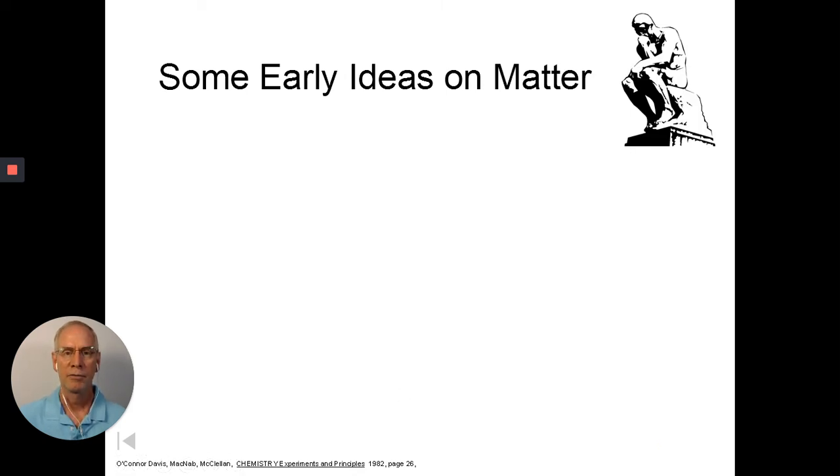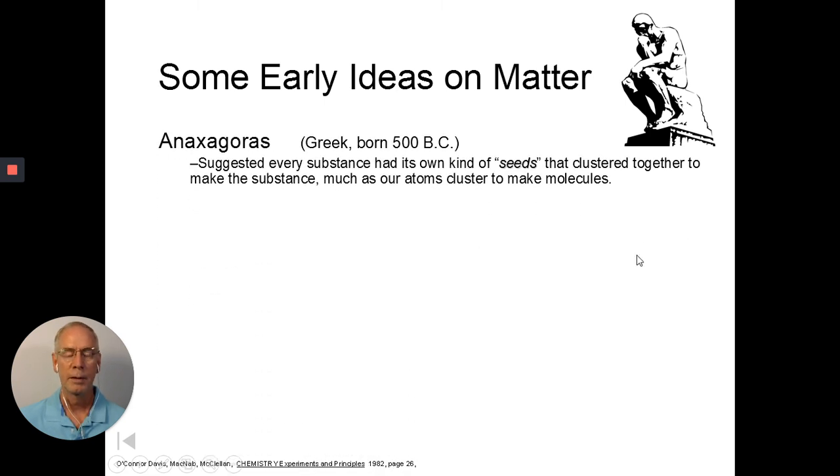I want to go through some early ideas of matter. And again, this is not testable by any means, but nevertheless, I want to go through these with you. This is the artist, Rodin, this is the thinker. So here's a very early philosophy, an idea on matter. Now, I don't know how to speak Greek or say names, but if you say it with some confidence, it sounds like you know what you're saying. So I'm going to say this guy's name is Anaxagoras.